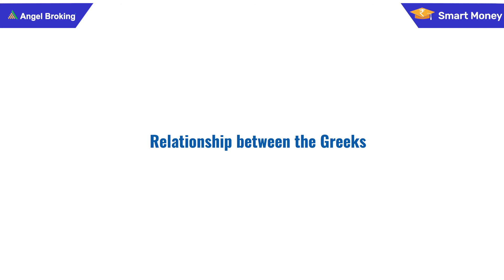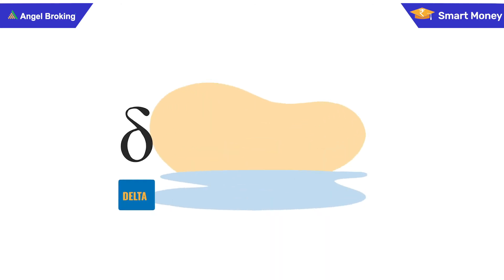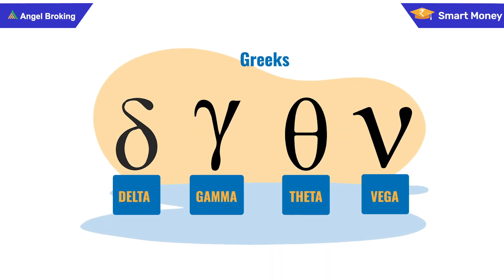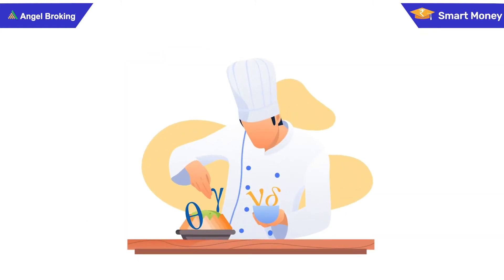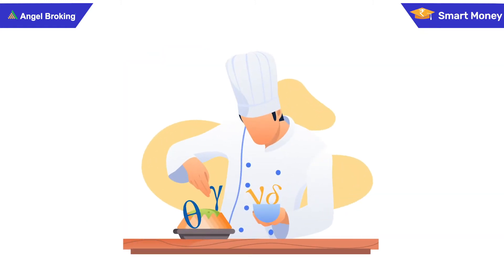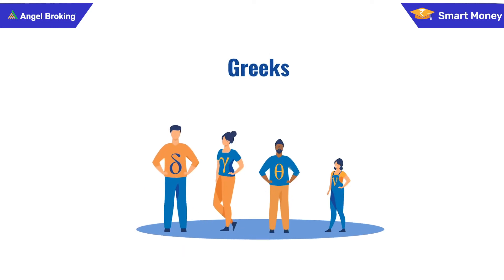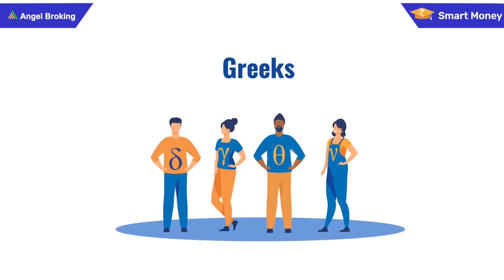Relationship between the Greeks. In this module we kept harping on the option Greeks, namely Delta, Gamma, Theta and Vega. Let's learn what their relationship is like. Option Greeks are the ingredients of a recipe that eventually come together to make a wholesome dish. Here is how Greeks also have a major impact on each other.